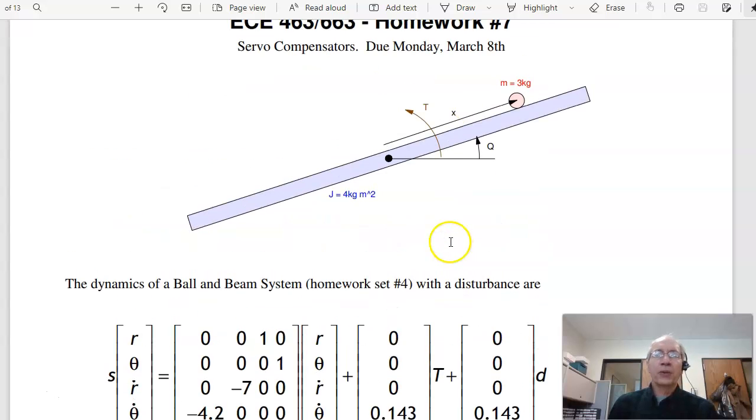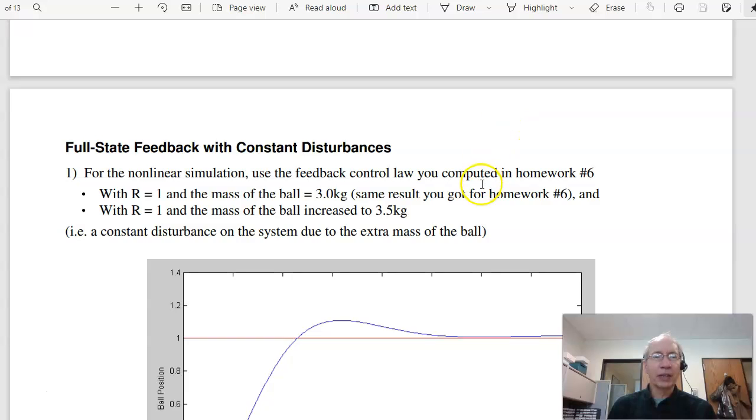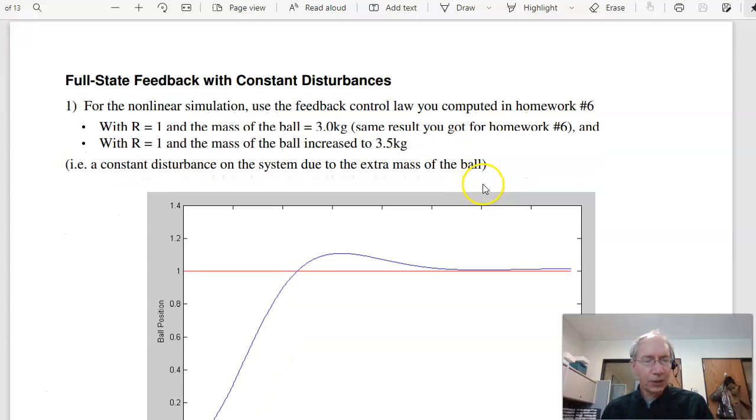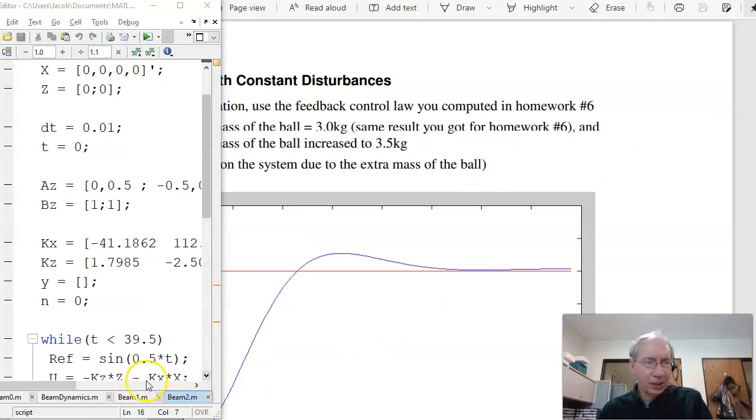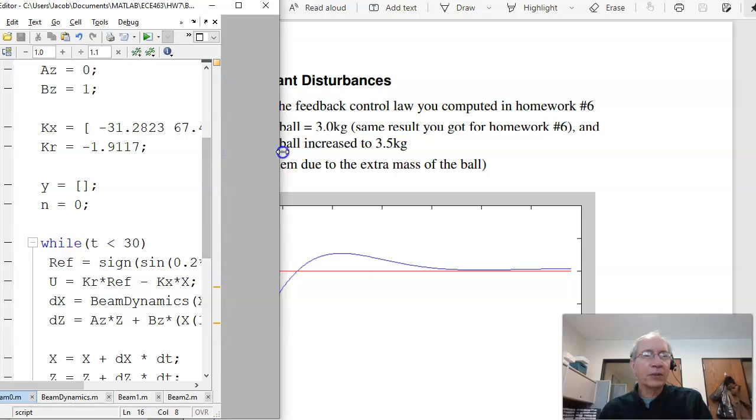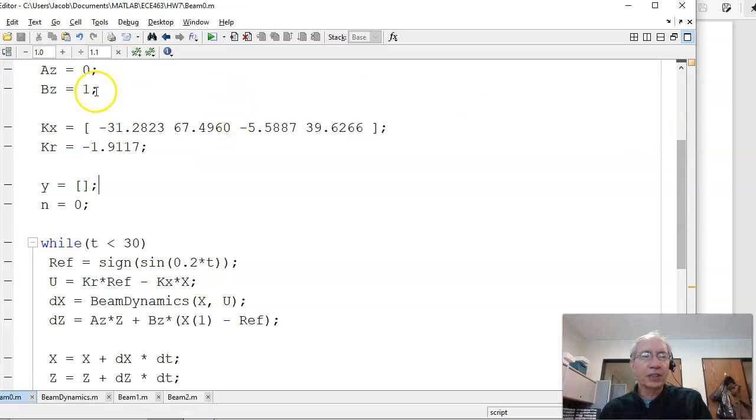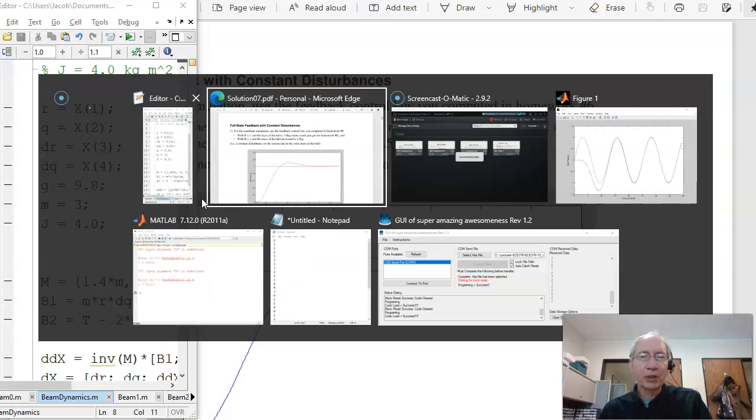I used the feedback control law that we came up with in homework six using full state feedback when the mass is three kilograms and when the mass is 3.5 kilograms. So we'll go into MATLAB. I call this beam zero. Here's the feedback control law we used in homework set number six, full state feedback with KR. I've got the nominal mass, three kilograms, and take the step response.